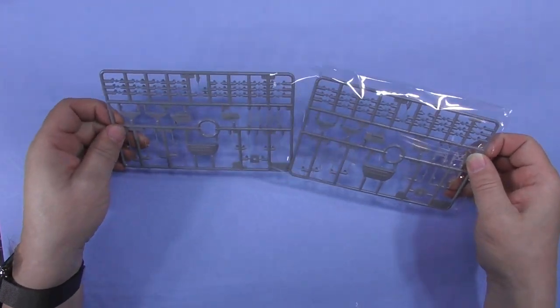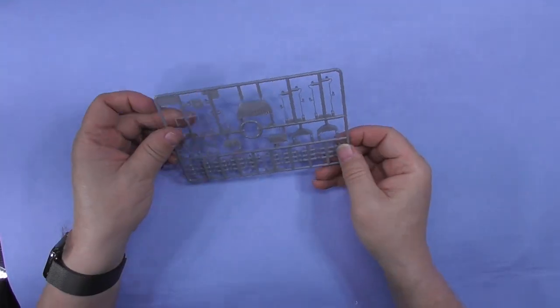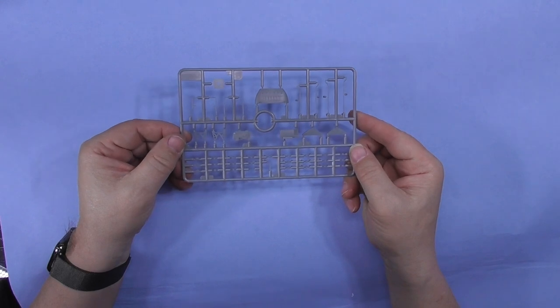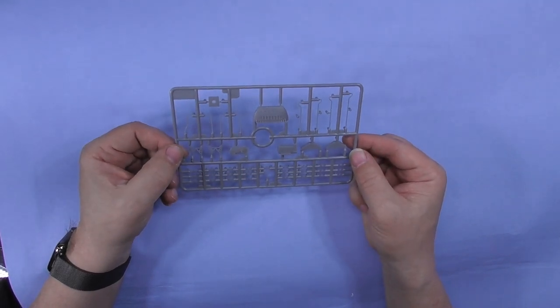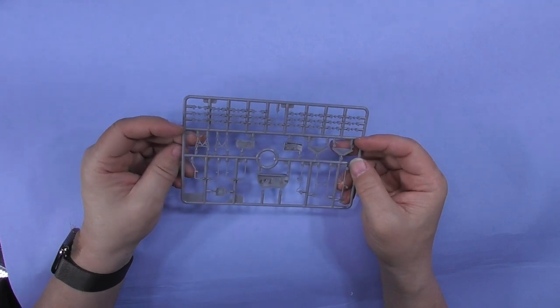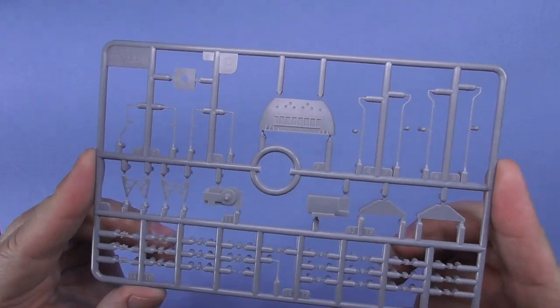Let's move on to some superstructure. This, matching sprues, Sprue B twice. So this looks like what you're going to be building up on this ship and across the ship, various parts, pieces, bits, bobs. Two of these sprues.